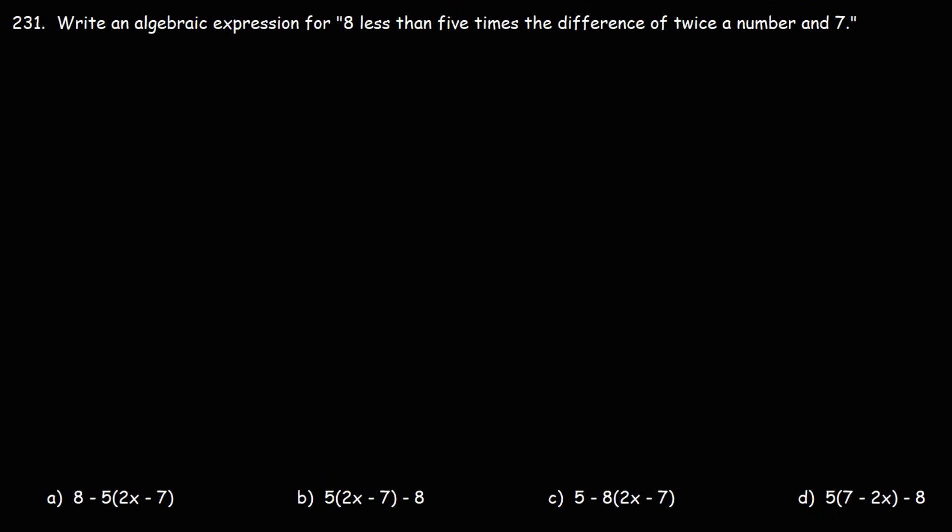Number 231. Write an algebraic expression for 8 less than 5 times the difference of twice a number and 7.